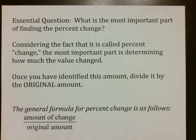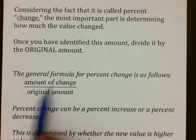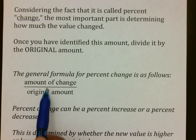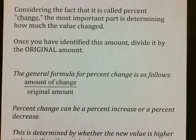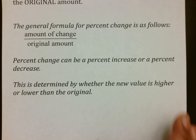The essential question today: what is the most important part of finding the percent change? Since it's called percent change, the most important part is determining how much the value changed. Once you have identified this, you simply divide by the original amount. The general formula for percent change is amount of change divided by the original. People mess up by dividing by the new amount, but it's always based off the original — you want to know how much it changed from what it was.